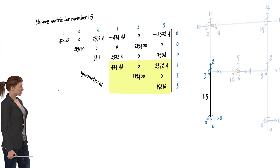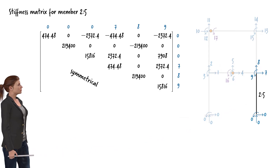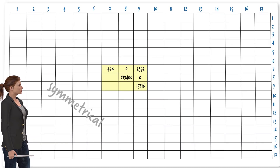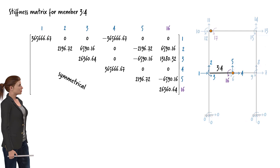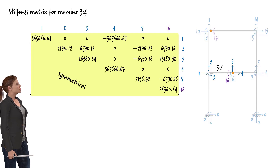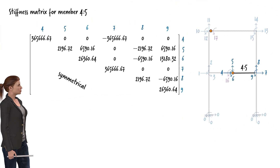We repeat this process for the remaining members. For column 2-5, the contributing block corresponds to rows and columns 7, 8, and 9, written into a 17 by 17 matrix. For beam 3-4, the entire stiffness matrix contributes to the frame stiffness; since the degrees of freedom are not contiguous, the 6 by 6 block breaks into multiple sub-blocks when mapped into the 17 by 17 matrix. For beam 4-5, the degrees of freedom are contiguous, so the block remains intact when mapped into the 17 by 17 matrix.